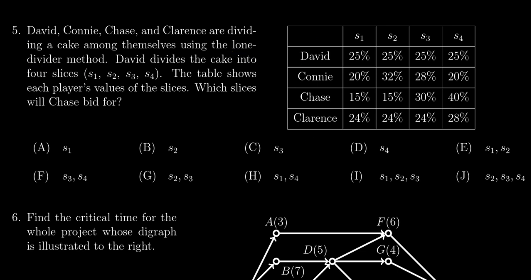Which slices will Chase bid for? Chase will bid for any slices which are a fair share or higher. Since there are four players, 25% of the cake is a fair share.